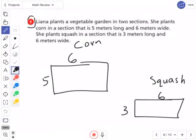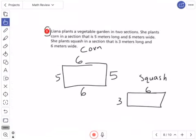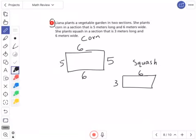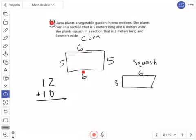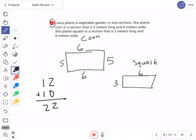If my top is 6, my bottom is 6, this left side is 5, that side is 5. To find the perimeter I just have to add them up. 6 plus 6 is 12, 5 plus 5 is 10. I can add it up: 2 plus 0 is 2, 1 plus 1 is 2. So that's a perimeter of 22 for corn.